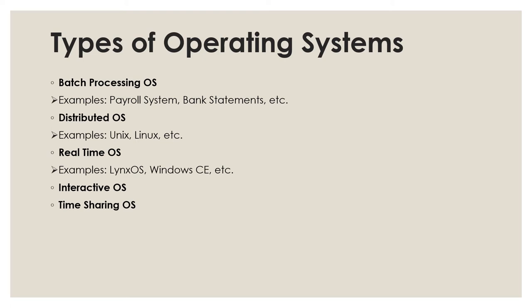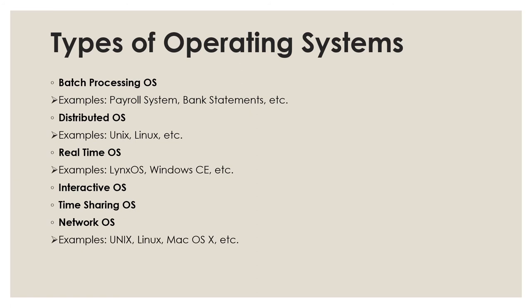Next is time sharing OS. A time sharing operating system allows many users to share computer resources simultaneously. In other words, time sharing refers to the allocation of computer resources in time slots to several programs simultaneously. Next is network OS: this system runs on a server and provides the capability to manage data, users, groups, security, applications, and other networking functions. Examples include Unix, Linux, Mac OS X, etc.